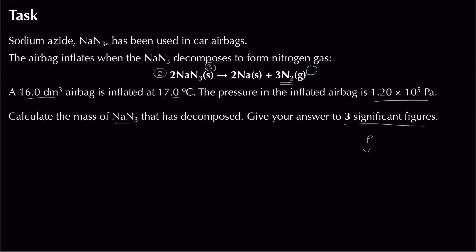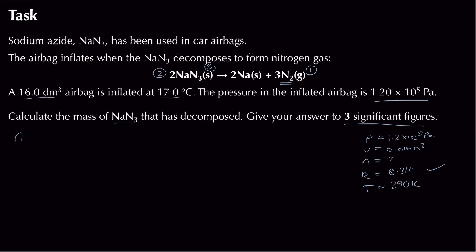Setting up PVNRT for nitrogen: n is unknown. Pressure = 1.2 × 10⁵ Pa. Volume = 16 dm³ → divide by 1000 → 0.016 m³. R = 8.314 J K⁻¹ mol⁻¹. Temperature = 17°C + 273 = 290 K. One mark for correct unit conversions.